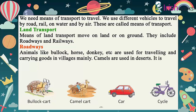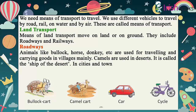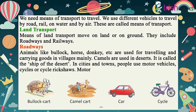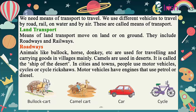In cities and towns, people use motor vehicles, cycles or cycle rickshaws. Motor vehicles have engines that use petrol or diesel. Examples include bullock cart, camel cart, car, and cycle.